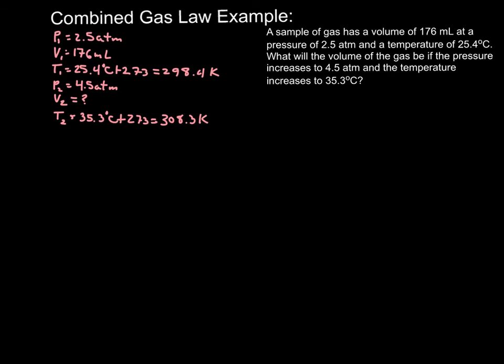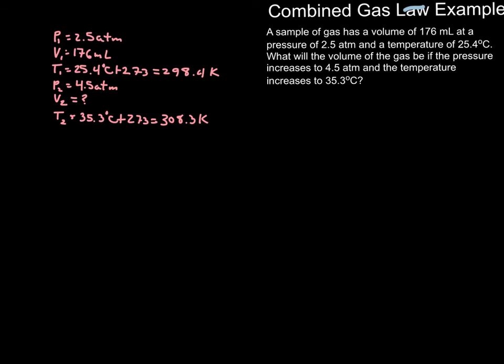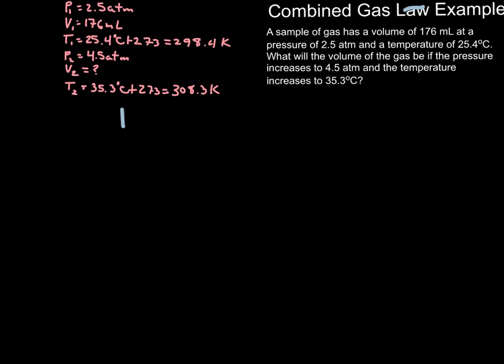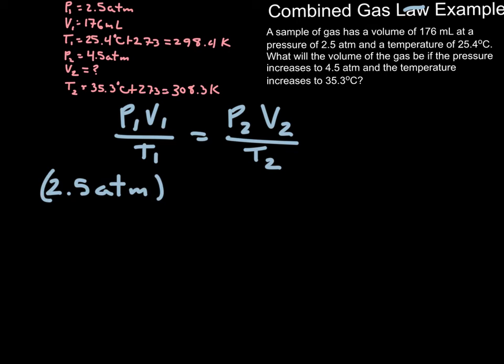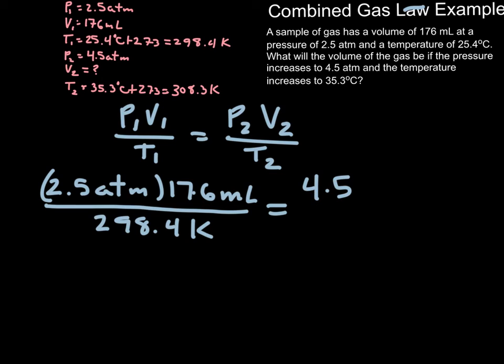So clearly, this is a combined gas law because every variable is involved and everything is changing. So we have to write out the combined gas law. So combined gas law is P1 V1 over T1, which is equal to P2 V2 over T2, and we're going to plug everything in. This is a proportion, so it's great. We know we're going to cross-multiply and divide. Let's plug everything in. 2.5 atmospheres times 176 milliliters divided by 298.4 Kelvin is equal to 4.5 atmospheres times our second volume that we don't know divided by 308.3 Kelvin.